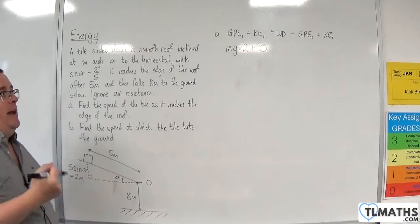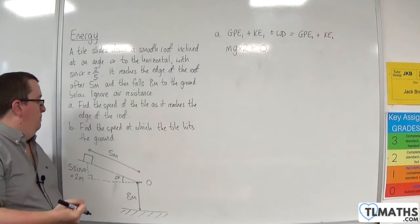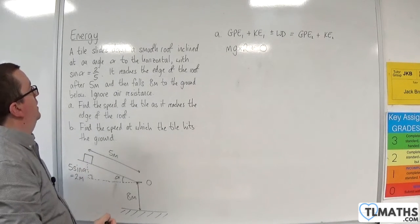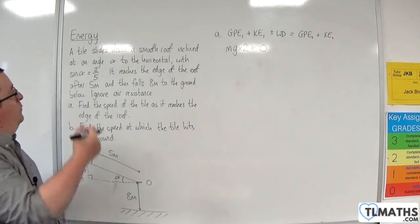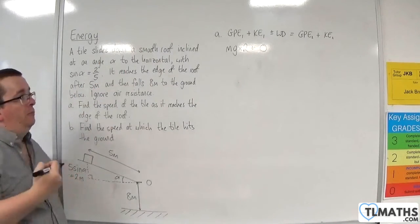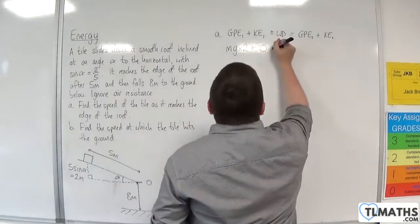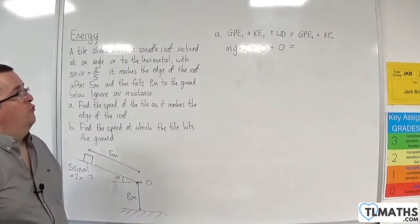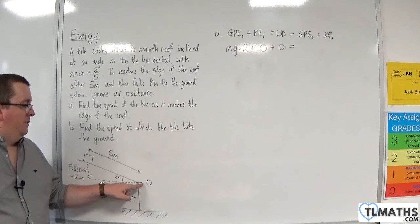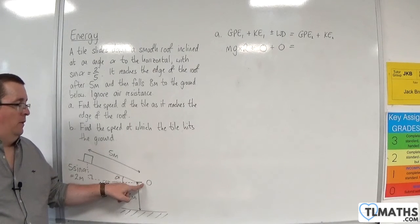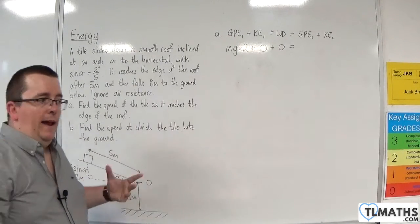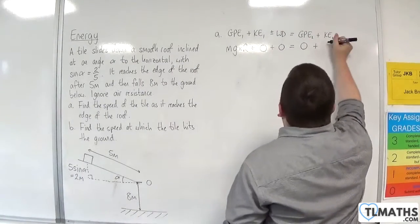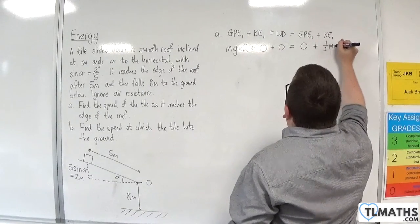Now, work done by any forces acting in the direction of motion. Well, there aren't any extra forces. We're ignoring air resistance. We have no friction because it's a smooth roof. So there are no other forces to consider. Now, the final gravitational potential energy, when we get to the bottom of the roof, is just going to be zero, mg times zero. Plus the final kinetic energy will be one-half mv squared.